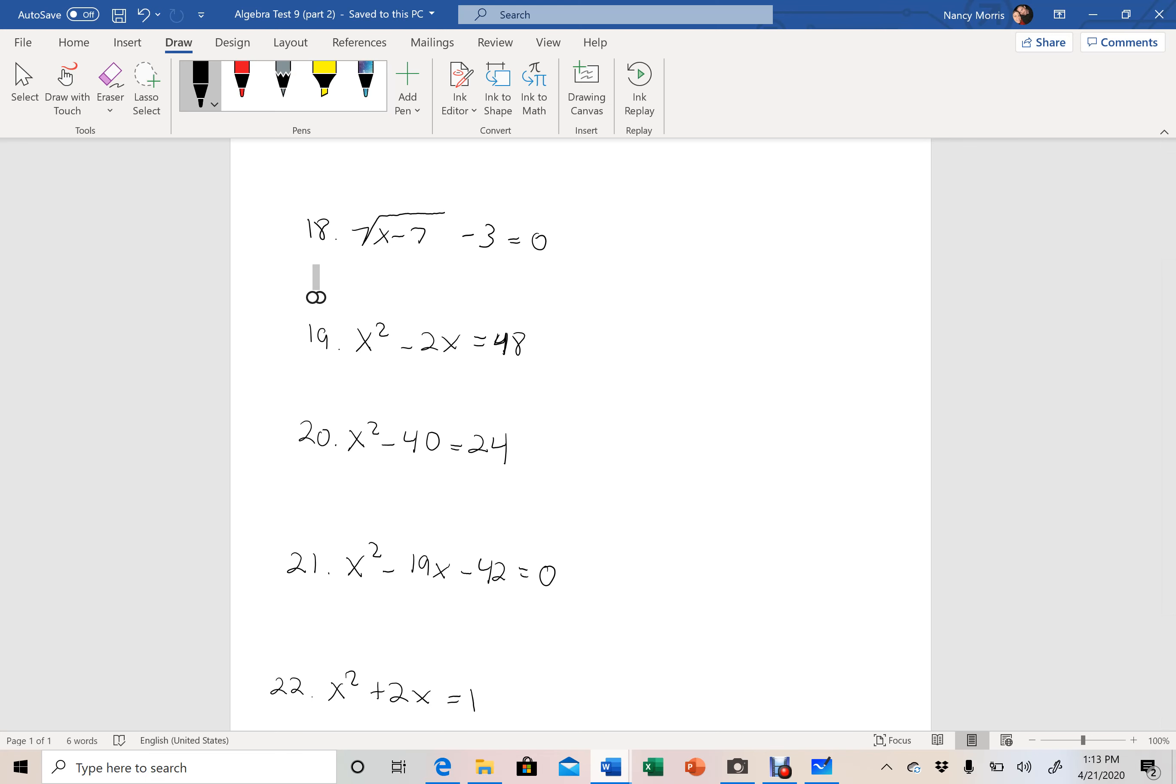So when you get to the part where it says x equals this, I would like that to be circled and clearly marked on your sheet. Show me all of your work for all of these, and make sure that you are checking them as well.